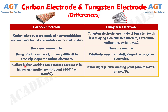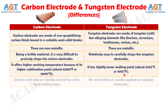No. 4: Carbon electrodes offer higher working temperature because of their higher sublimation point, about 6,500 degrees Fahrenheit or 3,600 degrees Celsius, whereas tungsten electrodes have a slightly lower melting point, about 3,422 degrees Celsius or 6,192 degrees Fahrenheit.